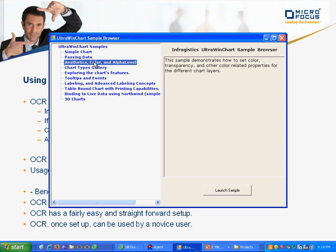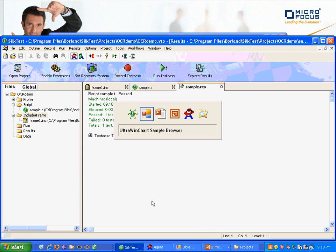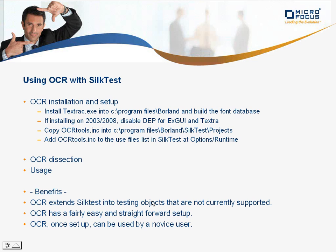So in review: the installation — very quick and easy. The usage of the tool — very easy to use by recording the raw coordinate click, adding the letters OCR to the existing click method, and replacing the coordinates with the quoted string of the text you want to click on.